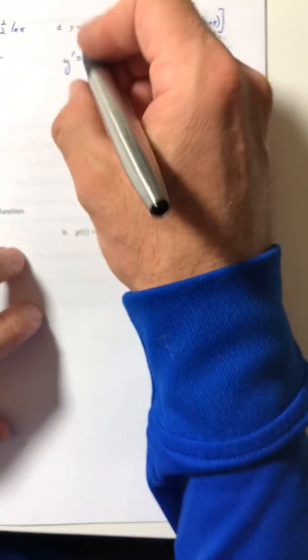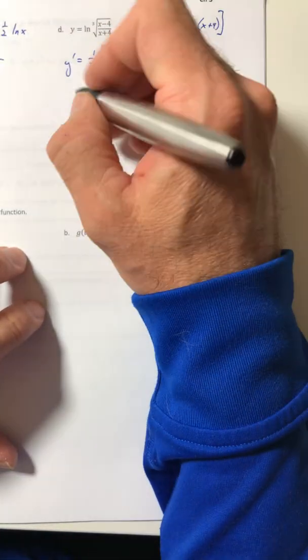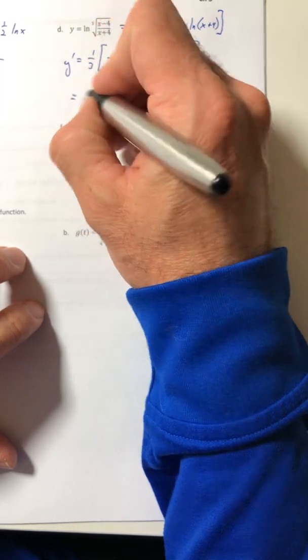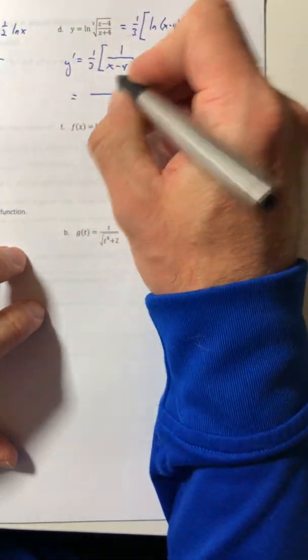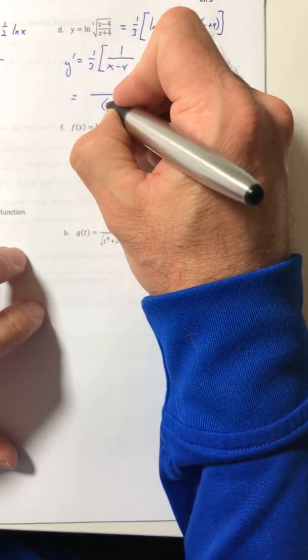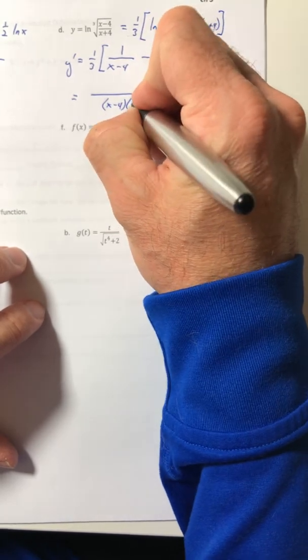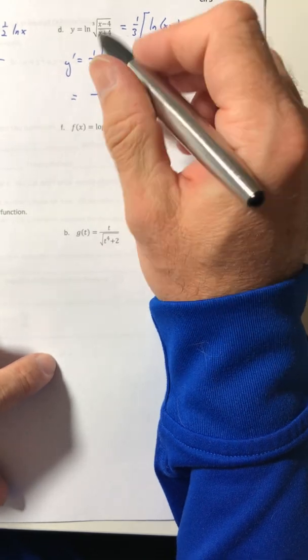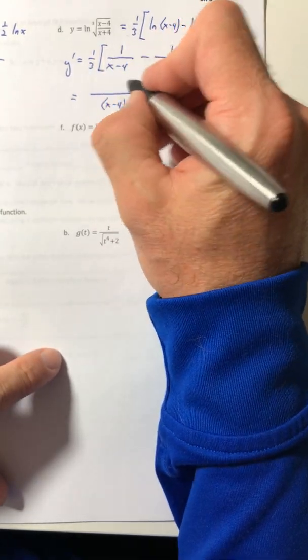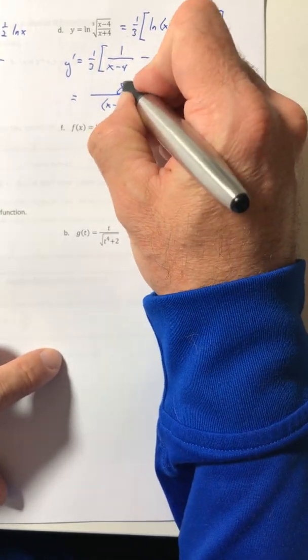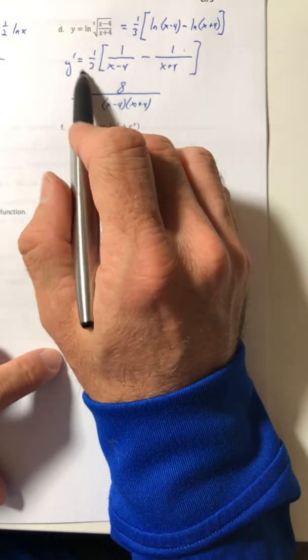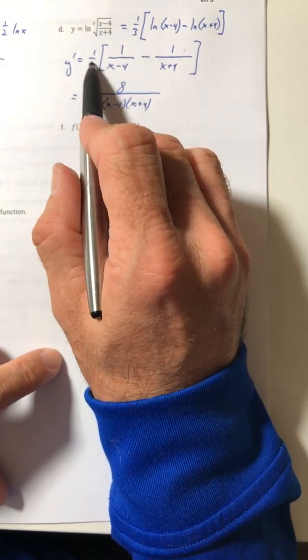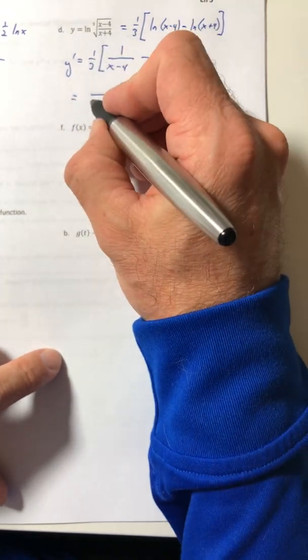And then the only thing left to really do is just get a common denominator, which is x minus 4, x plus 4. And then if you simplify all the tops, it actually comes out to equal 8. And then the one-third that was hanging out in the front, the 3 in the denominator, just sticks in the denominator.